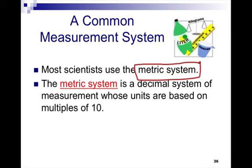The metric system is a decimal system of measurement whose units are based on multiples of 10. In physical science you spend quite a bit of time focusing on the metric system, so we're not going to do that much of it in biology.